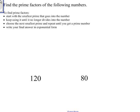To find the prime factors of numbers, first you start with the smallest prime that goes into the number, and then keep using that number until it no longer divides into it, and then choose the next smallest prime and repeat all of this until you get a prime number. Finally, you write your final answer in exponential form.